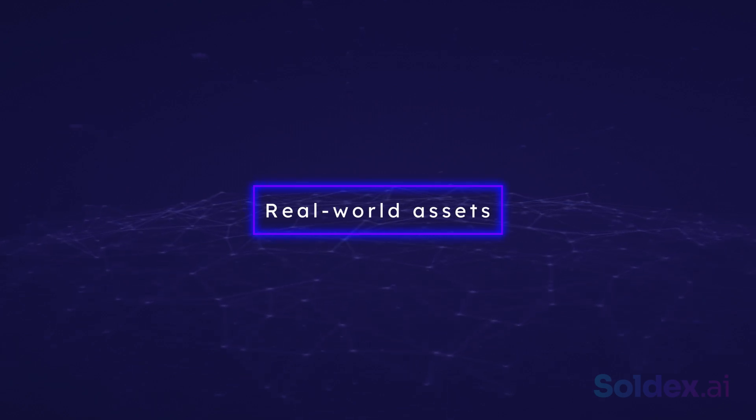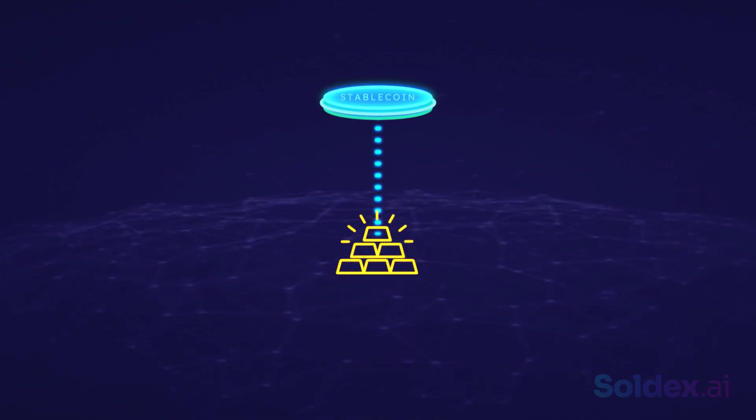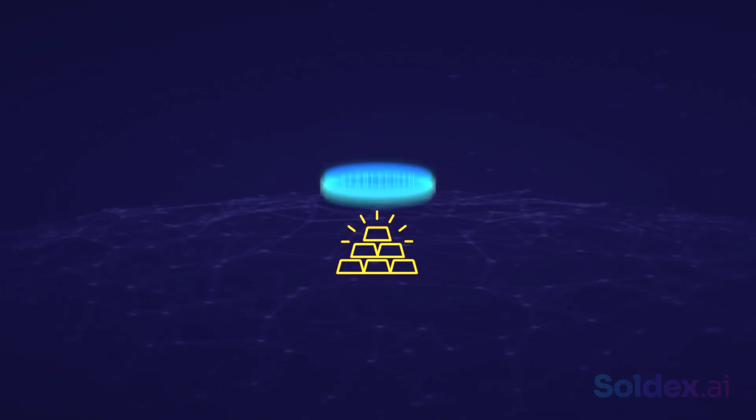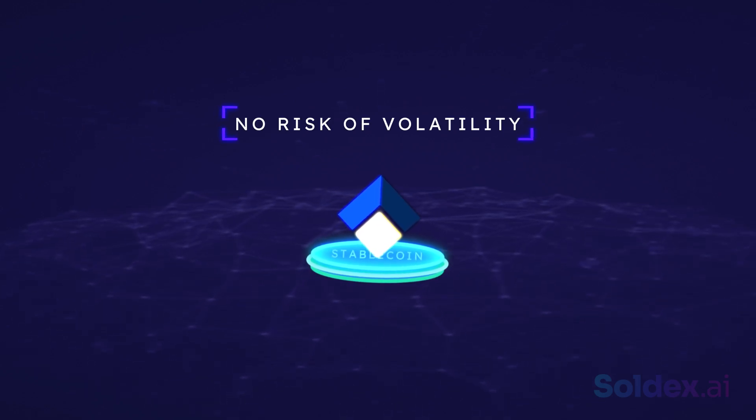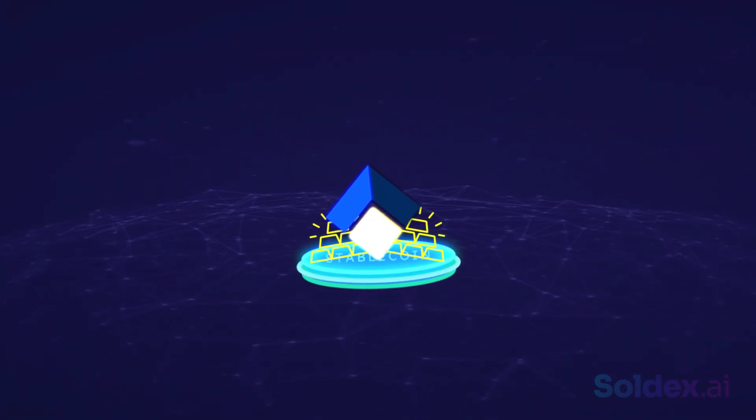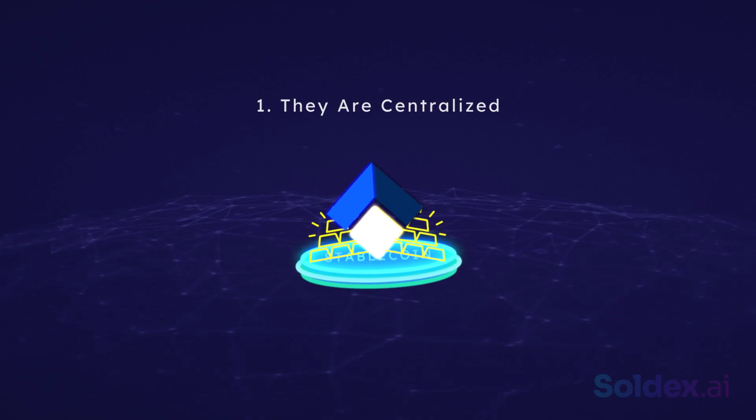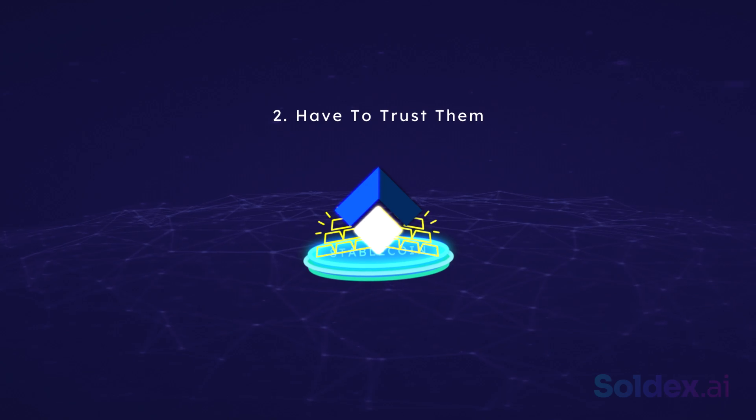Real-world assets: In this case, instead of being backed by fiat, the stablecoins are backed by assets like gold. An example is Digix. The advantage of gold-backed stablecoins is there's no risk of volatility associated with crypto assets. But the cons are similar to fiat-backed stablecoins: they're centralized, and there's no way to prove that the company has enough assets in reserve, so you have to trust them.